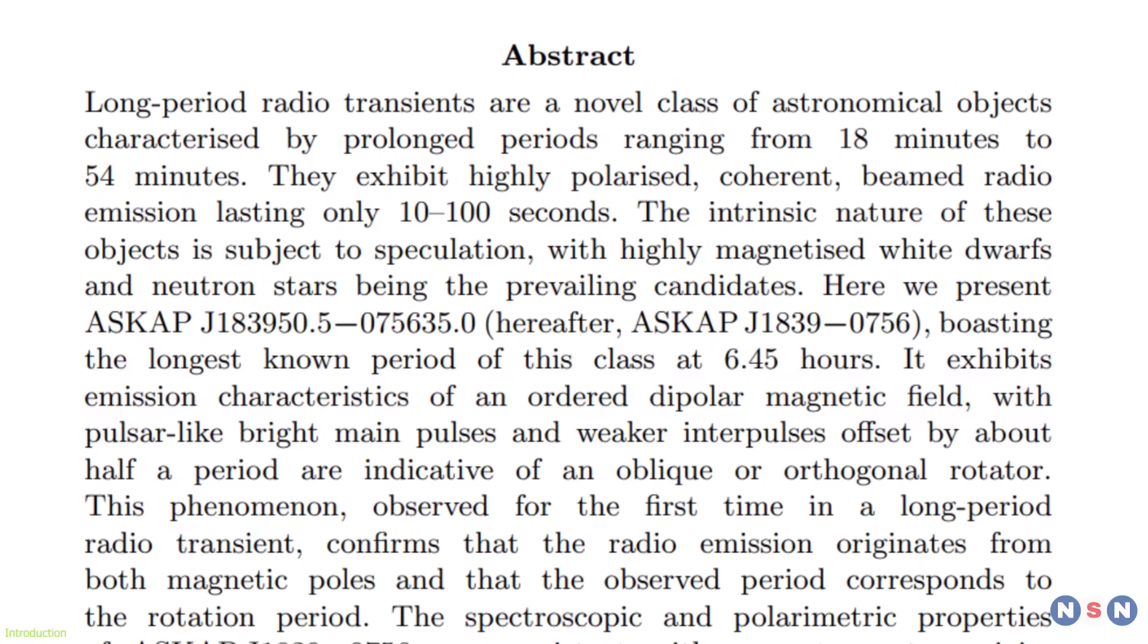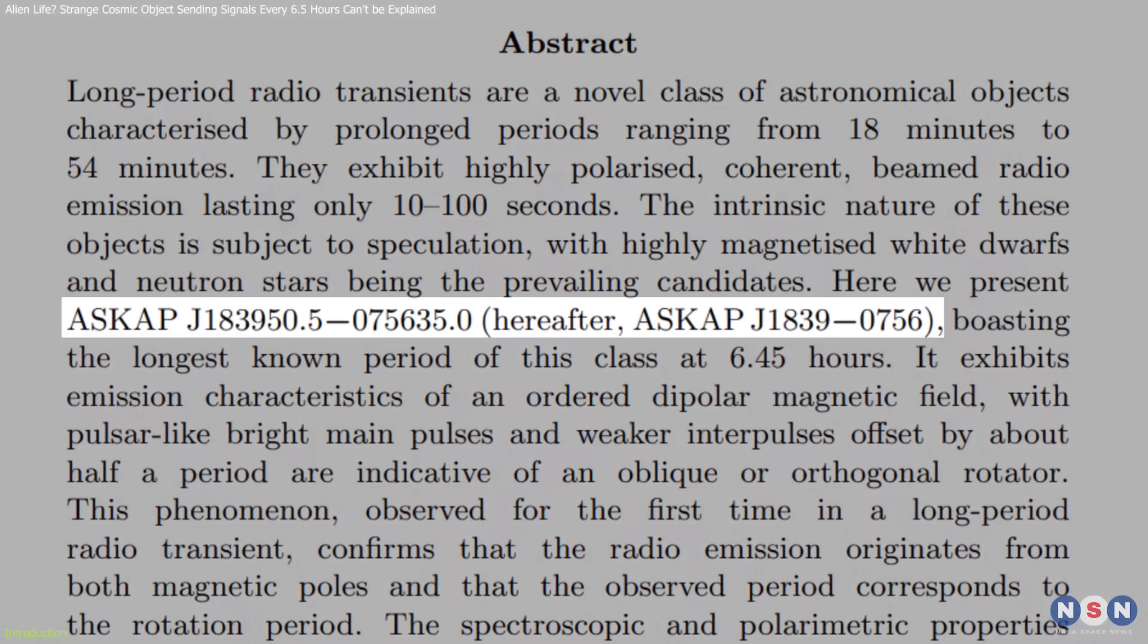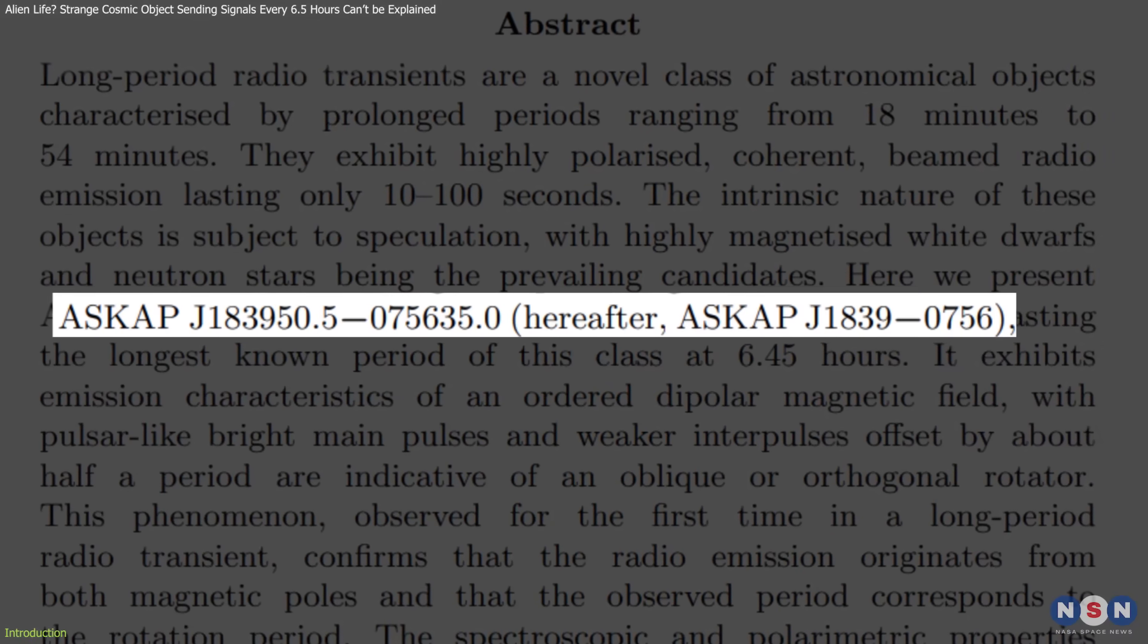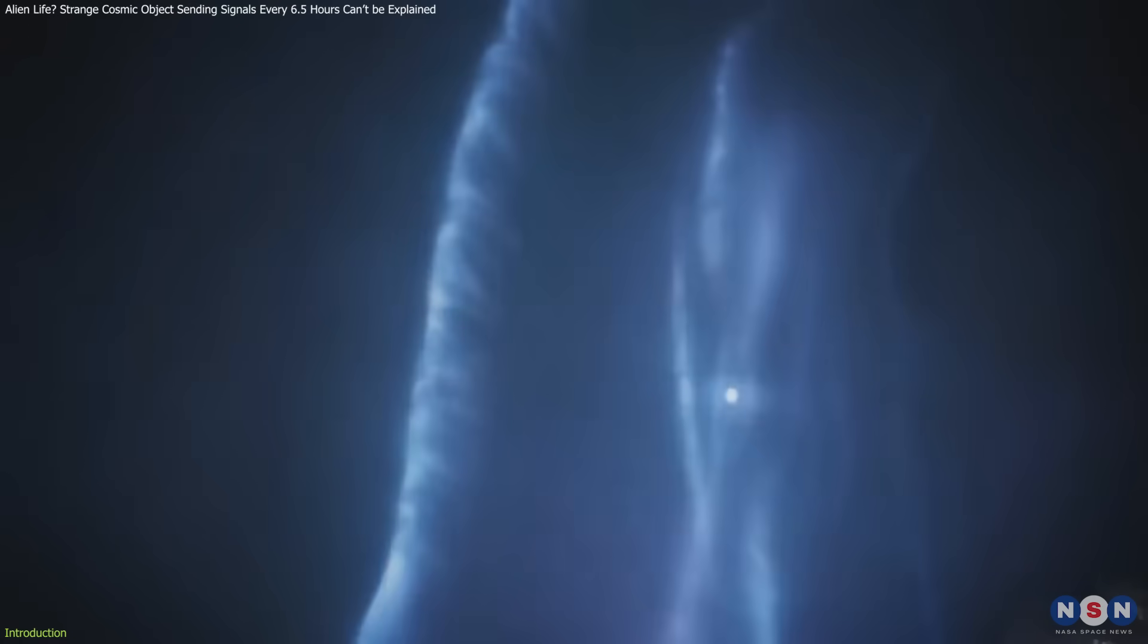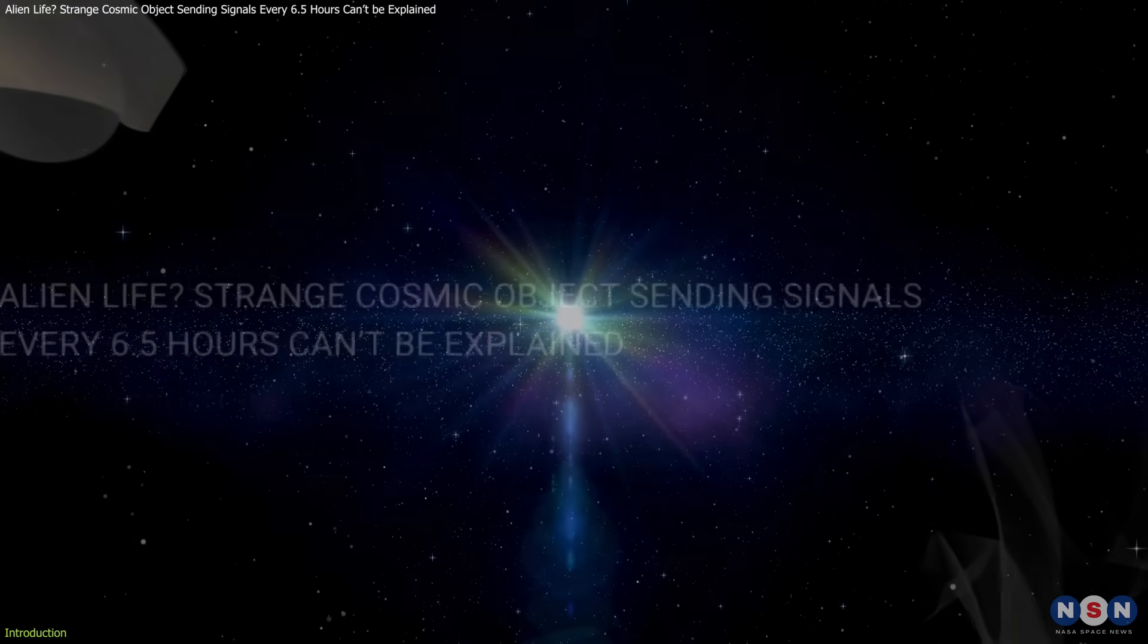This is a real newly discovered celestial object named ASCAP J1839-0756. It challenges our fundamental understanding of neutron stars and pulsars, pushing the boundaries of modern astrophysics.